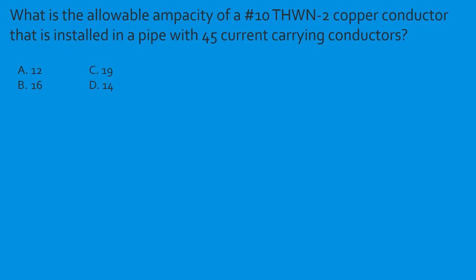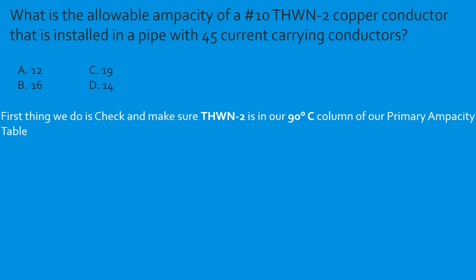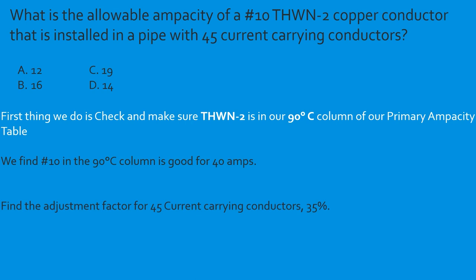Question: What is the allowable ampacity of a number 10 THHN-2 copper conductor installed in a pipe with 45 current-carrying conductors? Confirm insulation is in the 90°C column. Number 10 in the 90°C column is good for 40 amps. Forty-five conductors — adjustment factor from the bundling table is 35%, or 0.35. So: 40 × 0.35 = 14 amps. Select D.